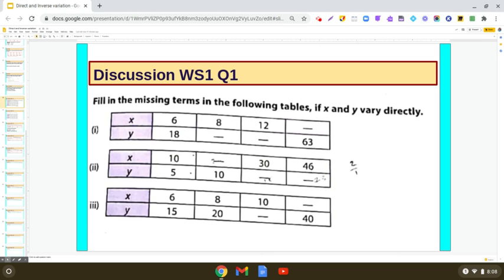Hello dear students, let us discuss question number 1 of worksheet 1. Find the missing terms in the following tables if x and y vary directly.